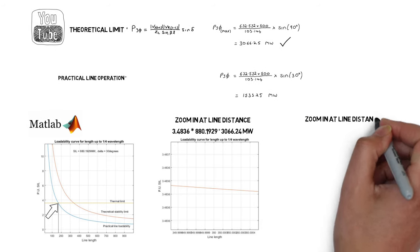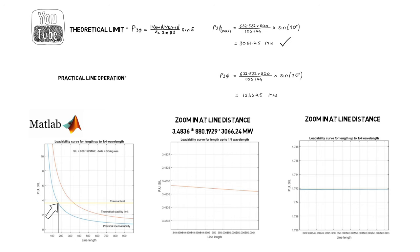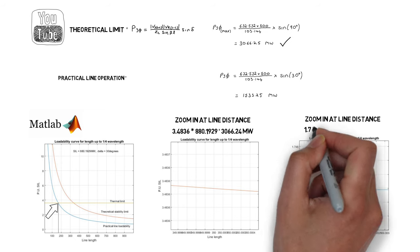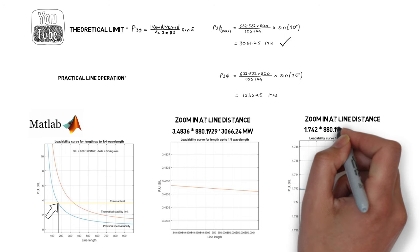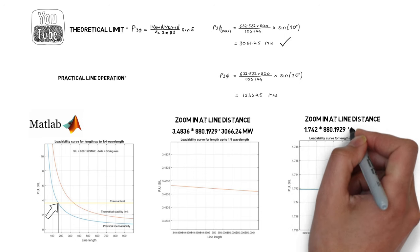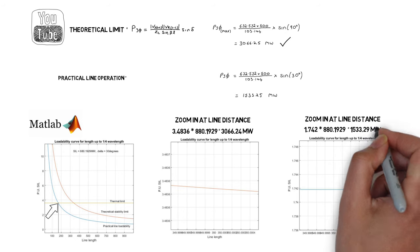Again I will zoom in. The practical line limit is equal to 1.742 times the SIL and this is equal to 1533.29 megawatts.